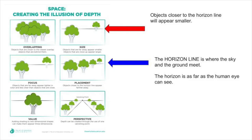Before you begin drawing in this lesson, you're going to need to know the art vocabulary word: horizon line. The horizon line is where the sky and the ground meet, or think of it as the horizon is as far as the eye can see.